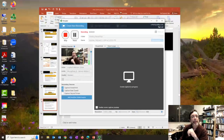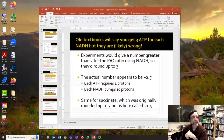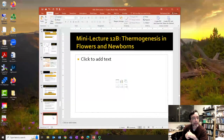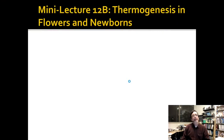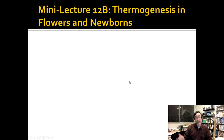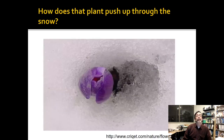So that was the mega mini lecture and now let's do three more that are actual mini lectures. The topic for this one is: what do flowers and newborns have in common? The mitochondria of each is actually generating heat rather than generating ATP, and they do it in two different ways.